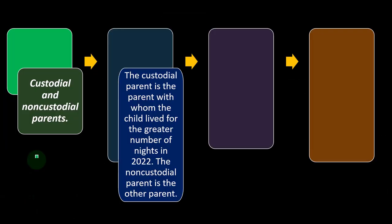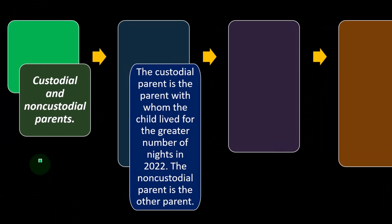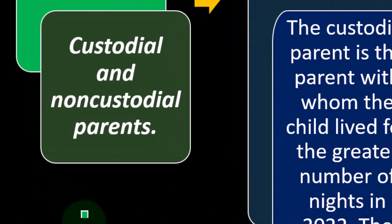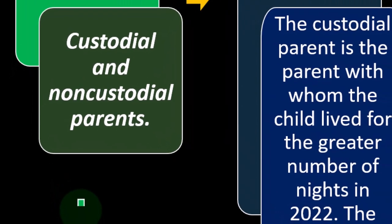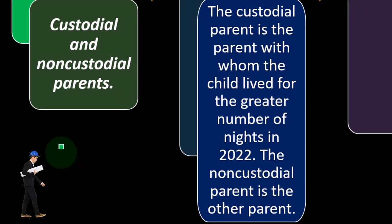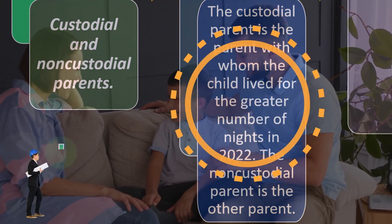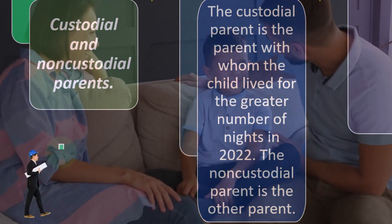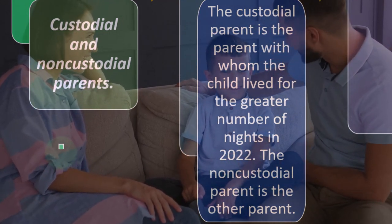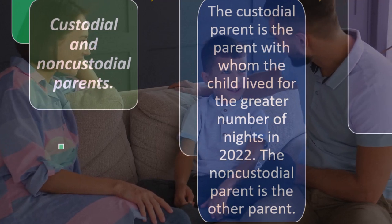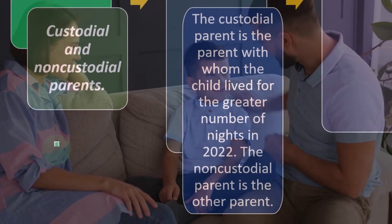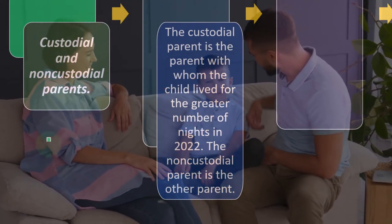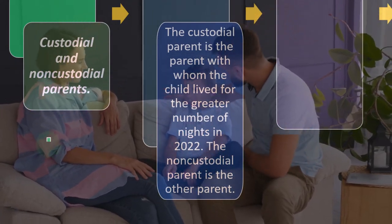Custodial and non-custodial parents: the custodial parent is the parent with whom the child lived for the greater number of nights in 2022. Usually you would think the custodial parent — the one the child lived with for most of the time — would be claiming the child as a dependent. The non-custodial parent is the other parent.